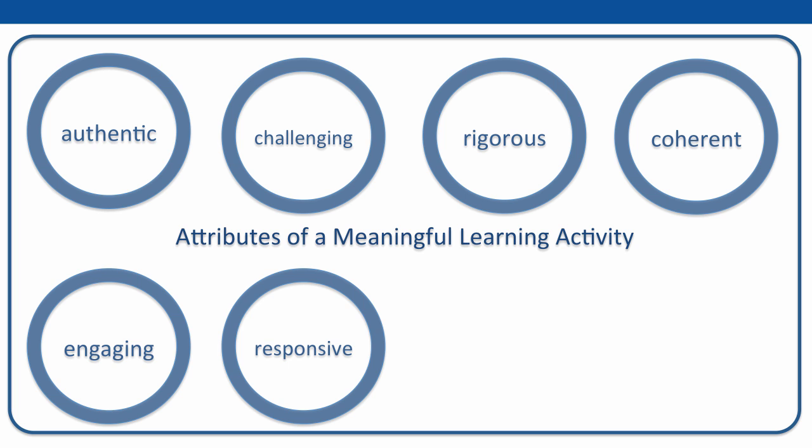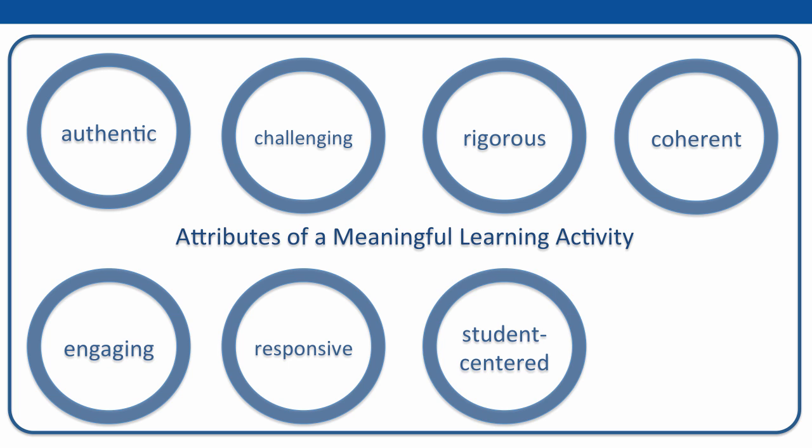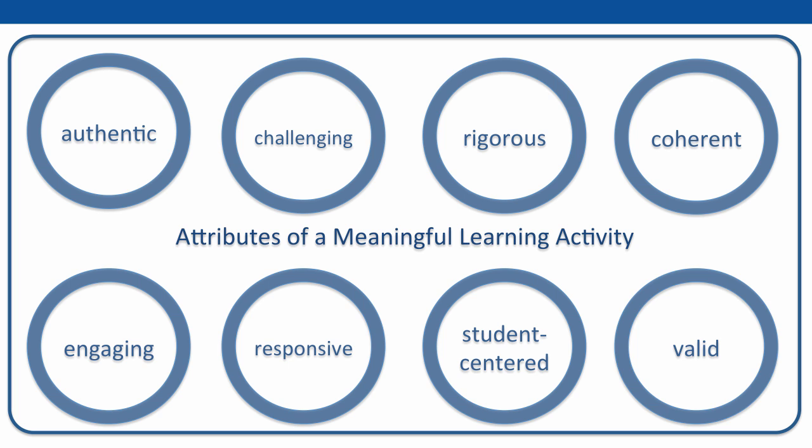Meaningful learning activities should focus on the learning needs and goals of individual students. If possible, activities should be tailored for a specific group of students — in other words, activities should be student-centered. The last attribute goes along with the concept of alignment discussed in a separate video: meaningful learning activities should be valid. The valid learning activity guides the student to achieve the stated learning objectives, and the purpose of the activity and its relationship to those objectives is explicitly stated.